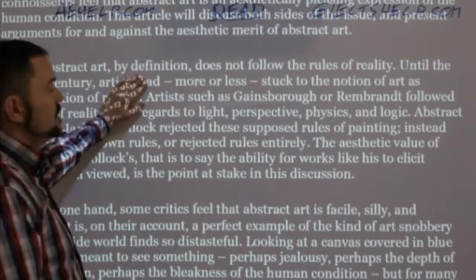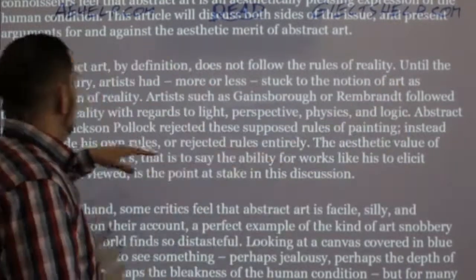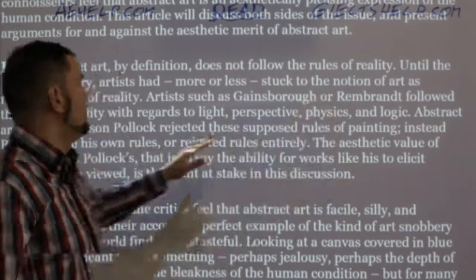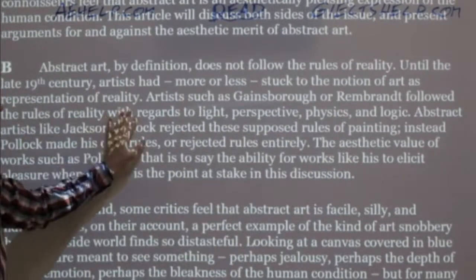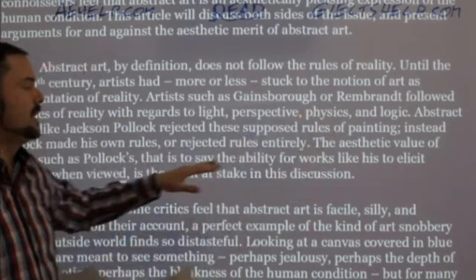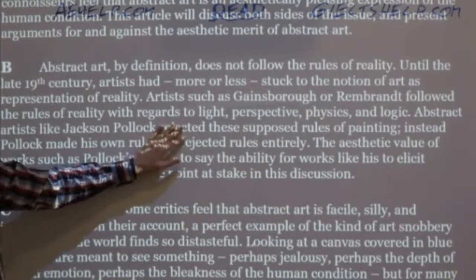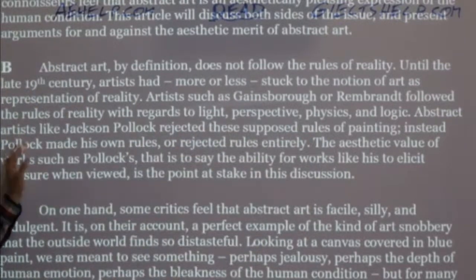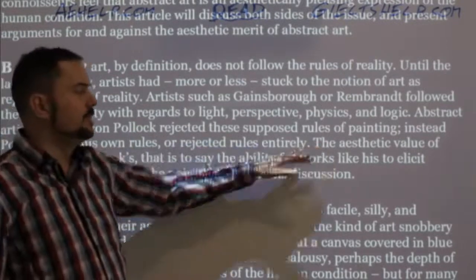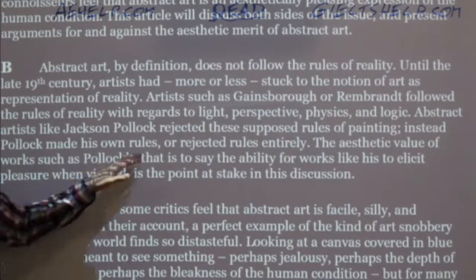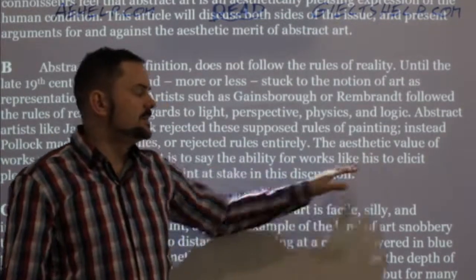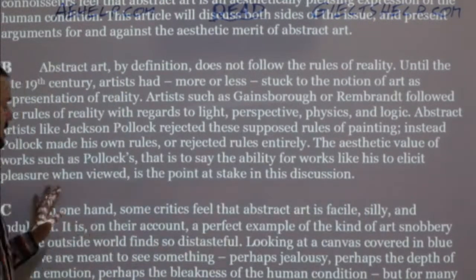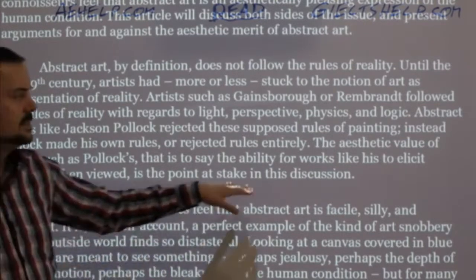Abstract art by definition does not follow the rules of reality. Until the late 19th century, artists had more or less stuck to the notion of art as representation of reality. Artists such as Gainsborough or Rembrandt followed the rules of reality with regards to light, perspective, physics, and logic. Abstract artists like Jackson Pollock rejected these supposed rules of painting — instead, Pollock made his own rules or rejected rules entirely. The aesthetic value of works such as Pollock's — that is, the ability for works like his to elicit pleasure when viewed — is the point at stake in this discussion.